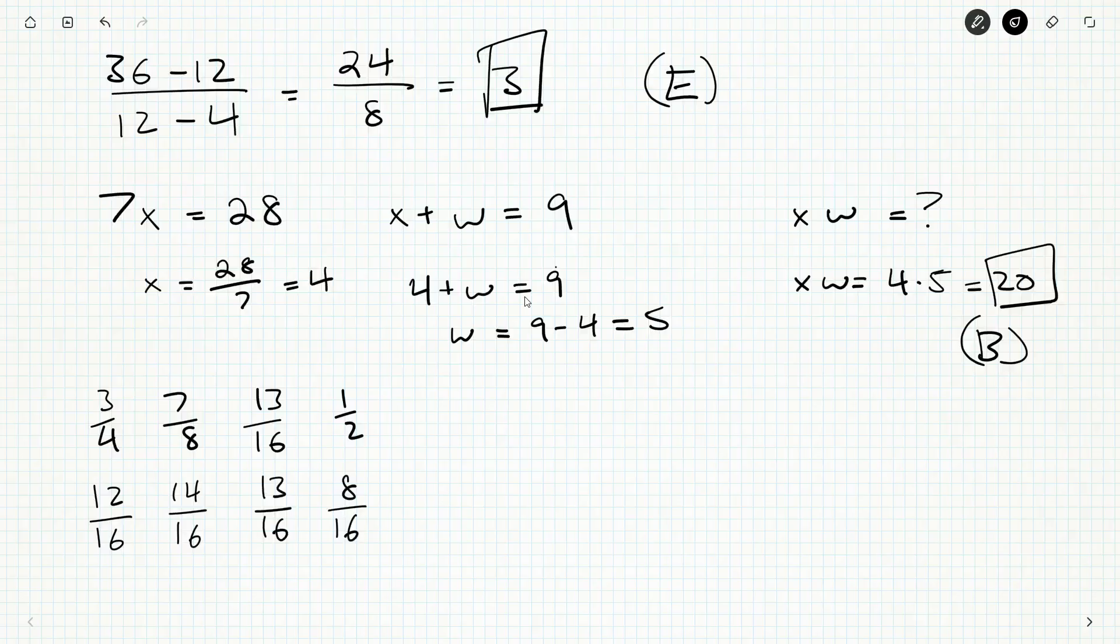So we can order these. Eight-sixteenths is the smallest because it has the smallest numerator. Then we have twelve-sixteenths, thirteen-sixteenths, and finally fourteen-sixteenths.